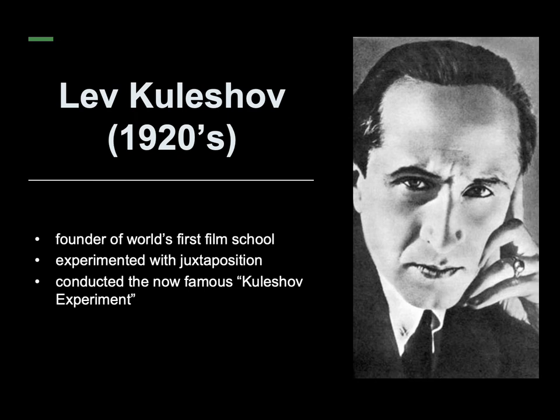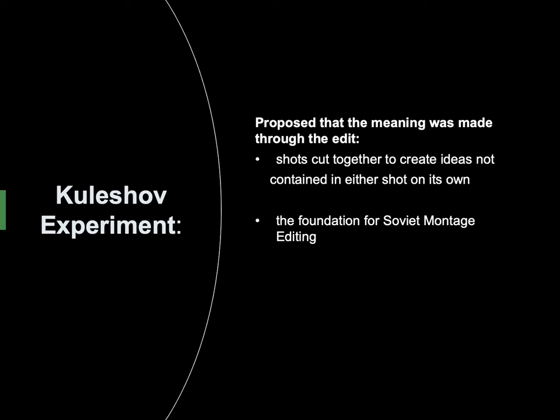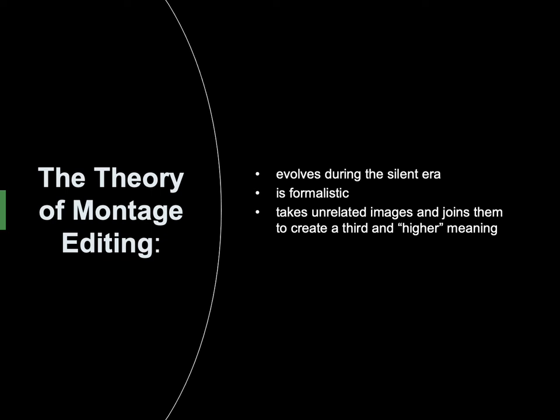Russian director Lev Kuleshov, in the 1920s, was the founder of the world's first film school. He experimented with juxtaposition and conducted the now famous Kuleshov Experiment. The hypothesis proposed that the meaning was made through the edit — shots cut together to create ideas not contained in either shot on its own. The theory of montage editing, which evolves during the silent era, is formalistic, taking unrelated images and joining them to create a third and higher meaning.